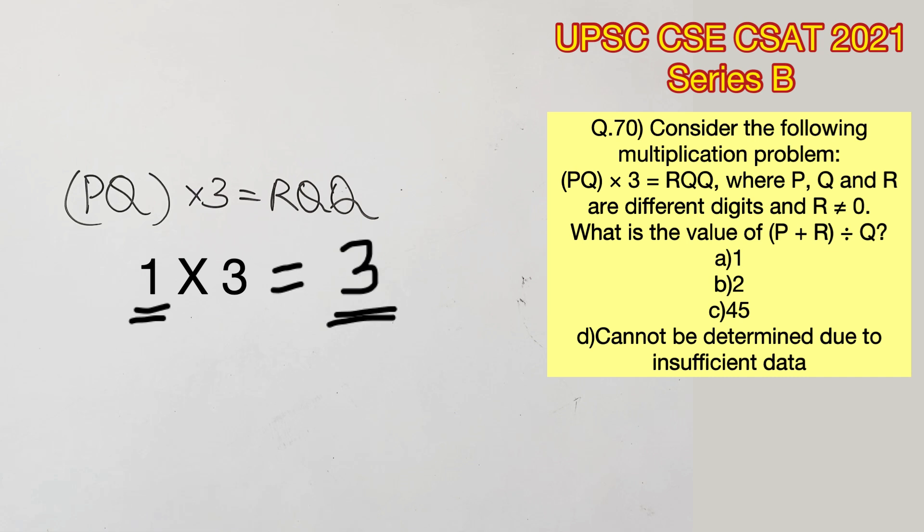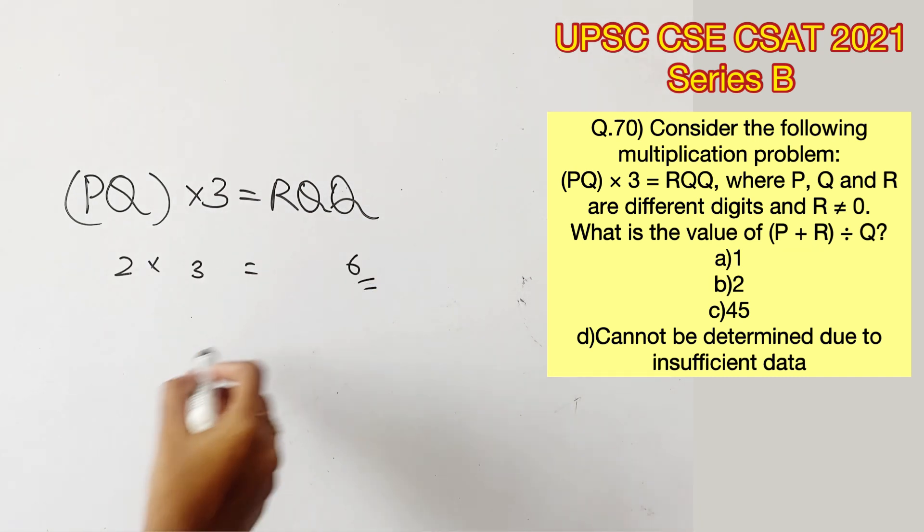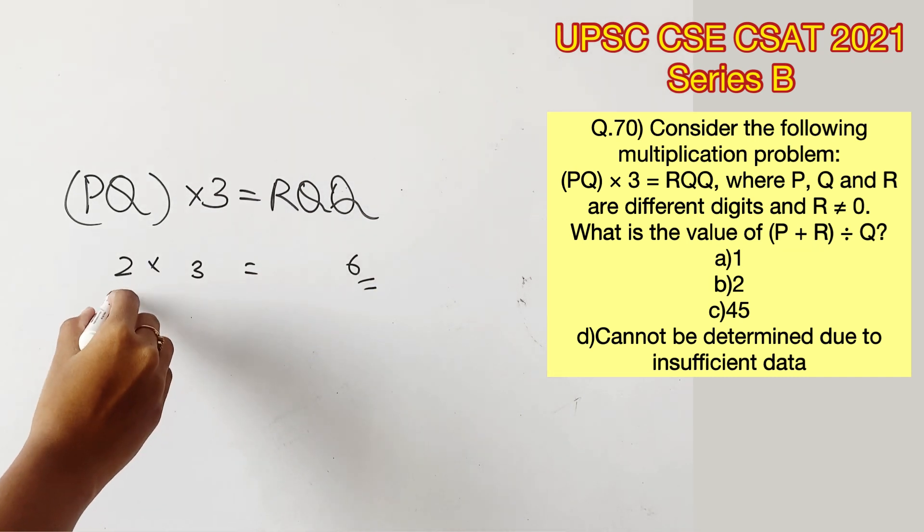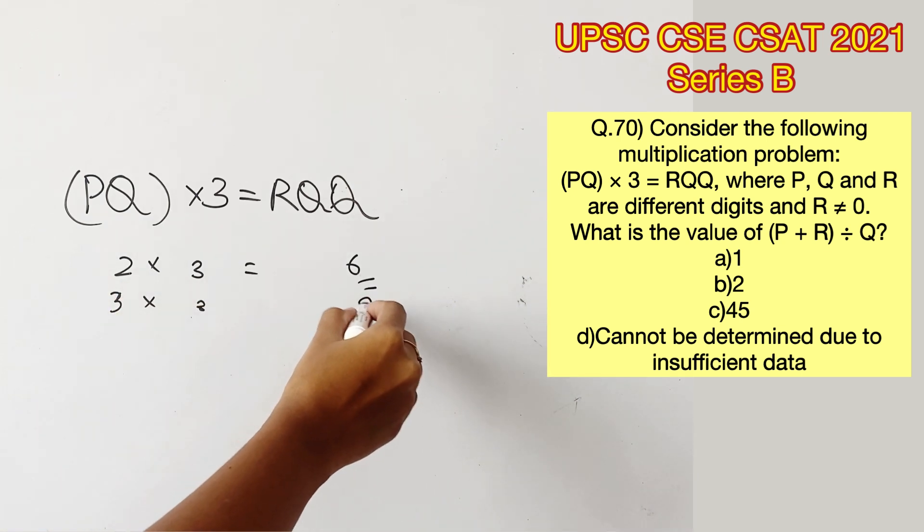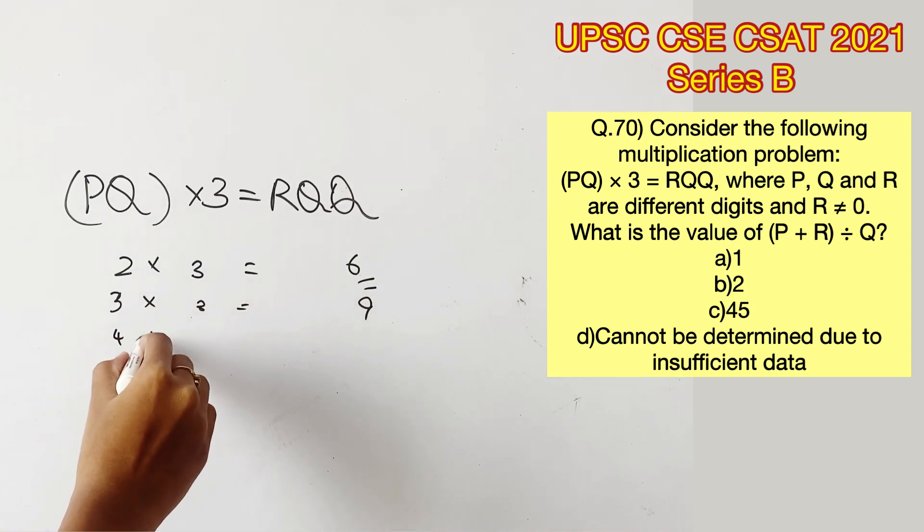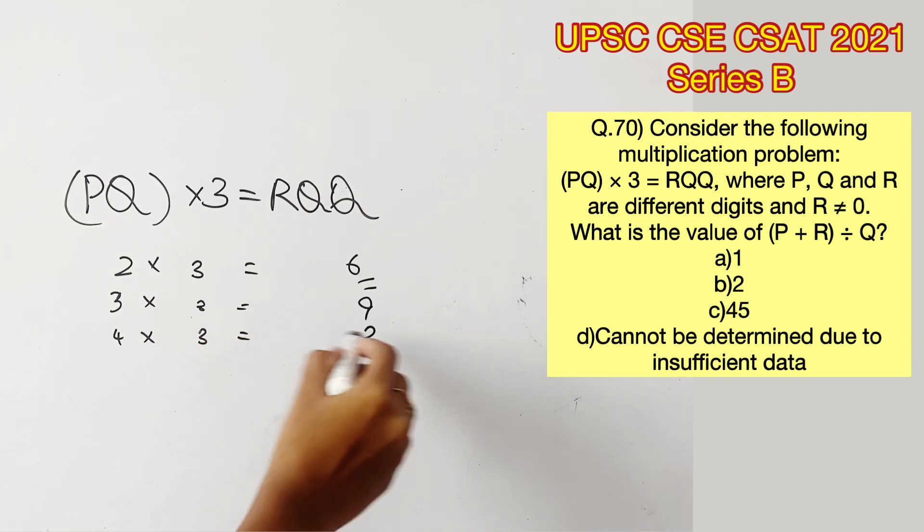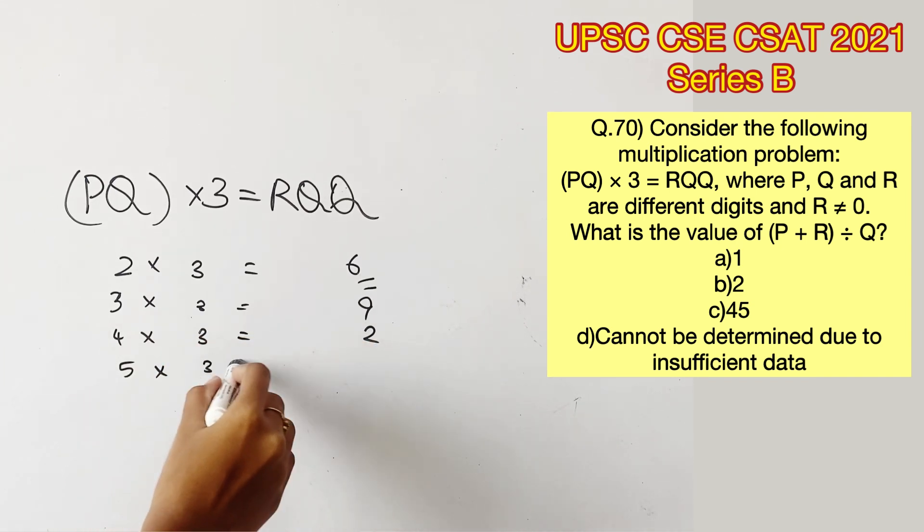1 into 3 will give us 3, so that can be rejected. 2 into 3 will give us 6, so the units place and the number multiplied are not similar. 3 into 3 will give us 9, also not similar. 4 into 3 will give us 12, 2 in the units place, also not similar.